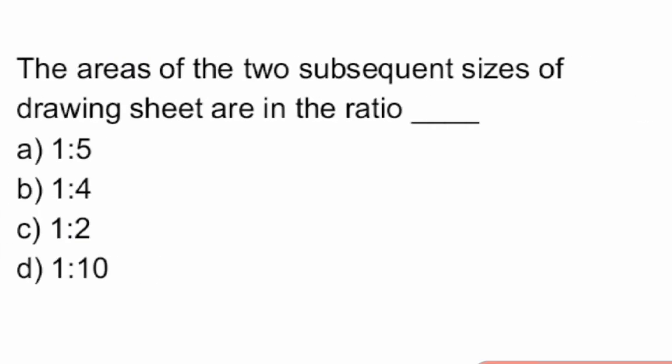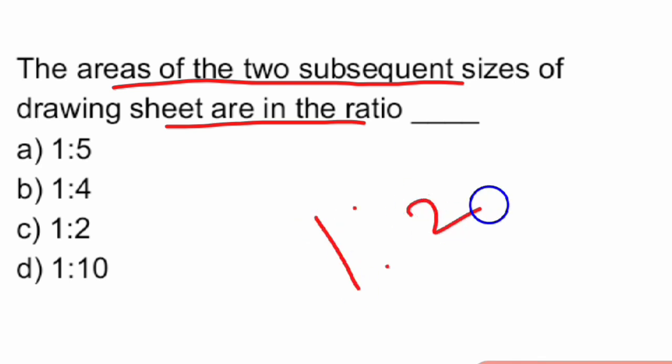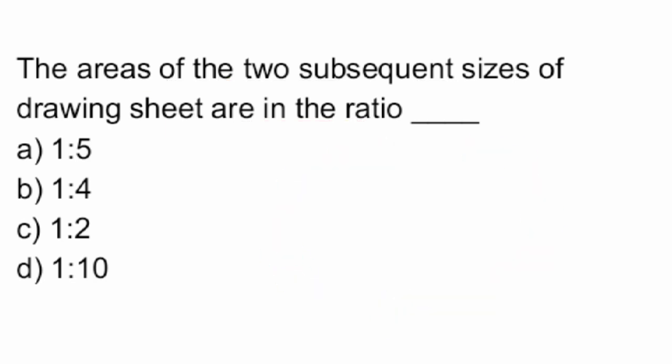Next question: the areas of the two subsequent sizes of drawing sheet are in what ratio? The areas of the two subsequent sizes of drawing sheets are in the ratio of 1 is to 2.